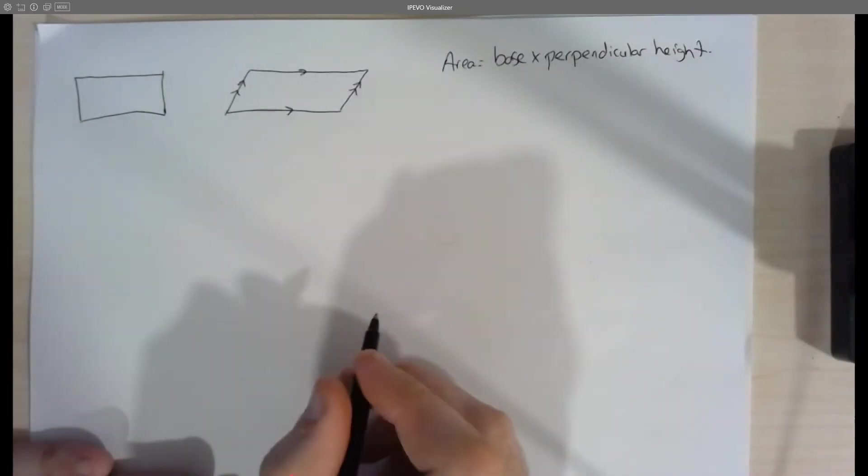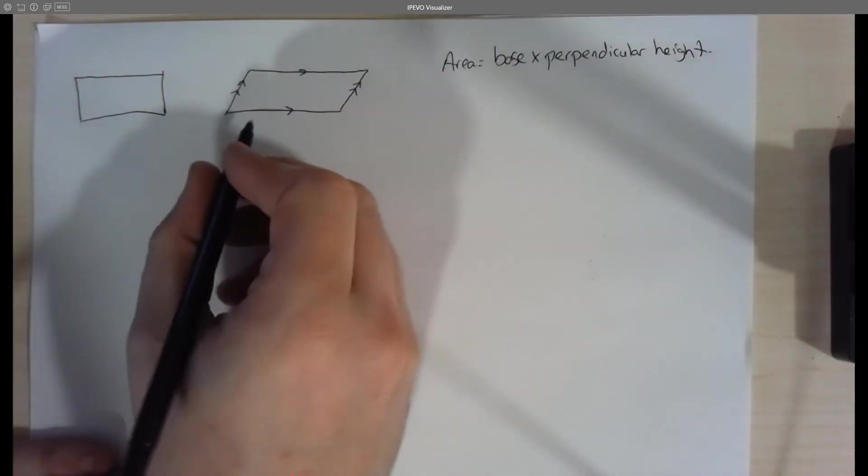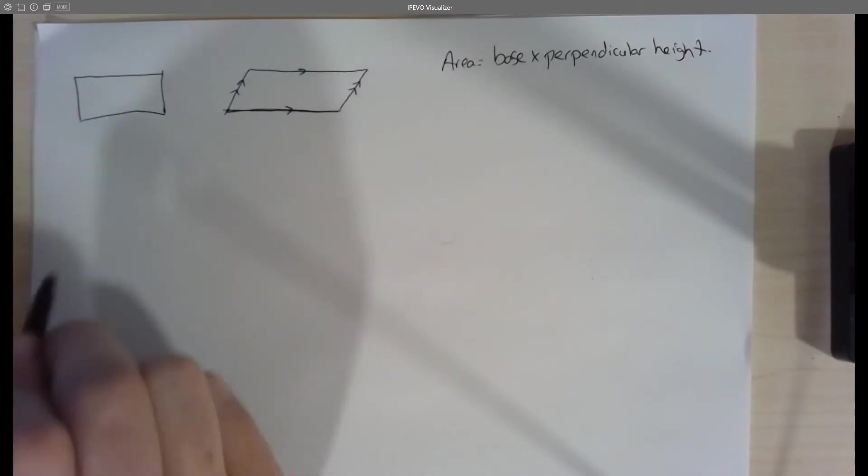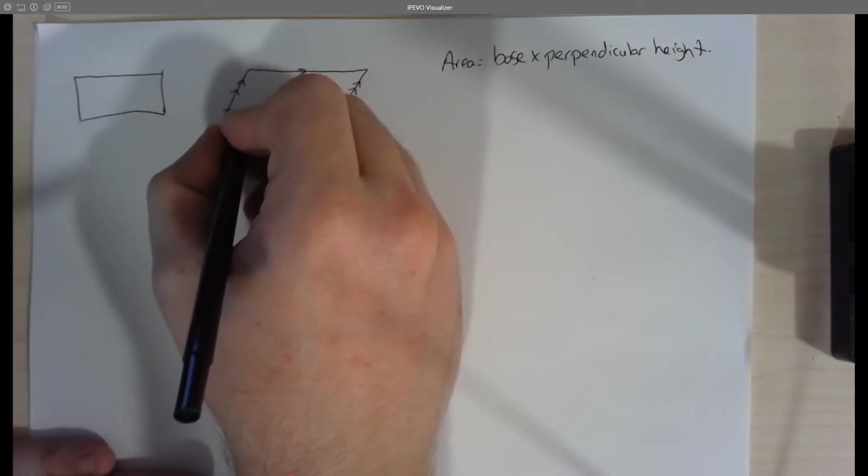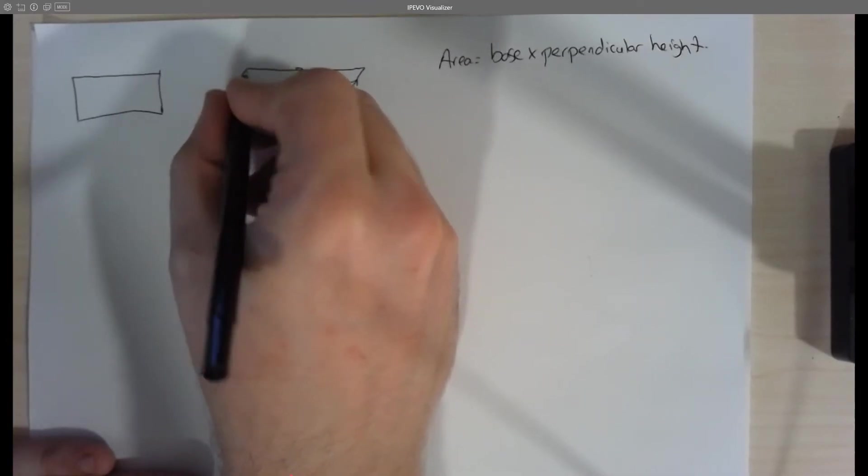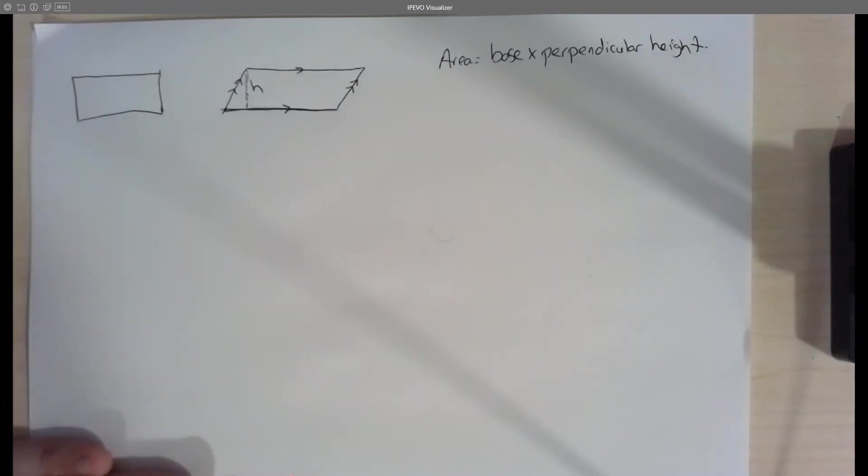So perpendicular height, that's kind of an odd way to say it. It's basically base, we just are going to take the distance here. Perpendicular height though, is basically saying from this line, let's go on a straight line up and then that's the height we're going to be working with.